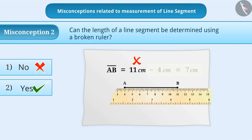But this is wrong understanding. Here we need to subtract 4 cm from 11 cm, which gives us the correct result 7 cm.